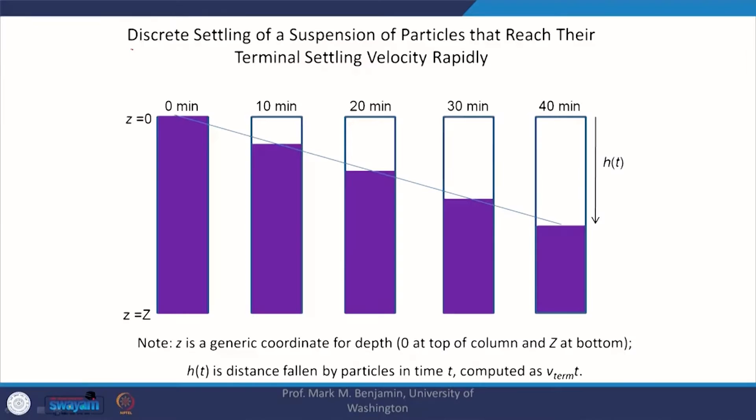We moved on to Type 2 settling, where due to differences in velocities, a bigger particle and a smaller particle have different settling velocities and come together. We were looking at flocs being formed — flocculent settling, which is Type 2. We looked at how to understand the system and design it, and examined some data and one example.